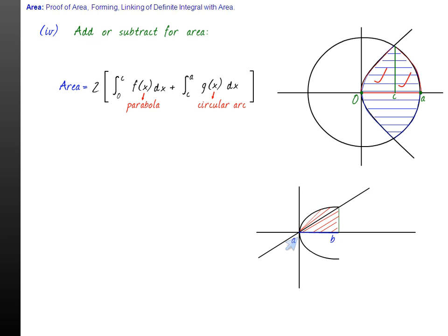In twelfth class board examinations of our country, area by other methods is not allowed because they are testing your application knowledge of definite integral. But in competitive examination, we can always do it whenever an area between a line and x-axis, that will either be a trapezium or triangle. So we can immediately go for half base into height or half sum of the parallel sides into the height for trapezium.